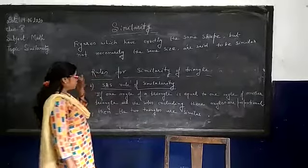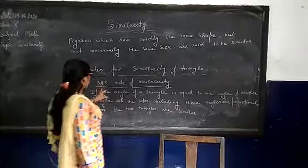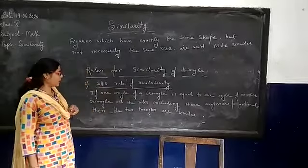Now we come to the second rule of similarity of triangles. This rule is also called the SAS rule of similarity. S means side and A is the angle of triangle.